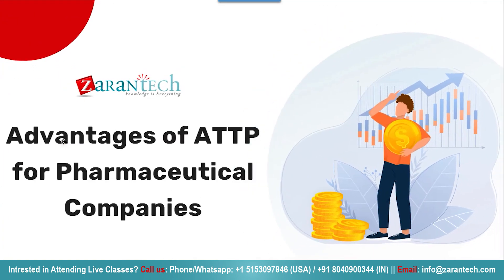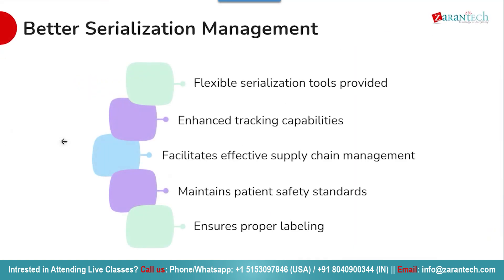With that foundation of what SAP ATTP is and how it works, let us look at the specific advantages it delivers for pharmaceutical companies. We will focus on three high-level benefits: better serialization management, increased efficiency and reduced cost, and more reliable verification. SAP ATTP provides flexible serialization tools that adapt to different regional requirements and products, ensuring items are properly serialized and labeled at the right levels — whether cases, pallets, or individual sellable units. The enhanced visibility from serialization improves patient safety by detecting potential counterfeit products and facilitates more targeted recalls by quickly locating affected products.